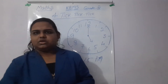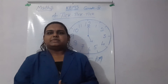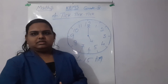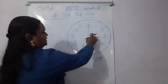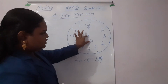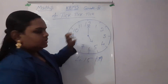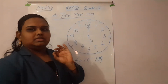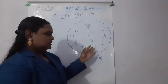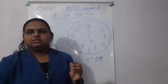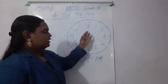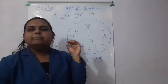There are two hands in a clock. What do they represent? The short hand and the long hand. The short hand represents the hour, and the long hand represents the minute.